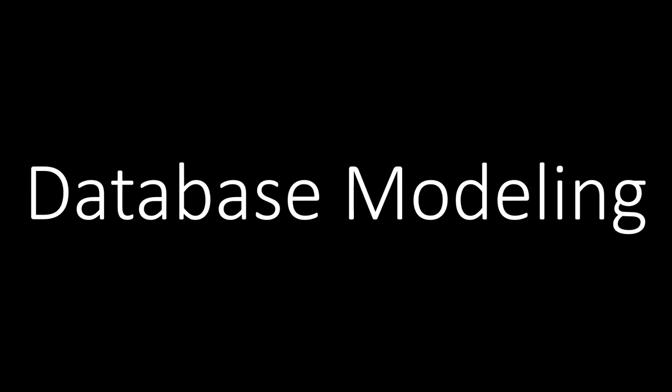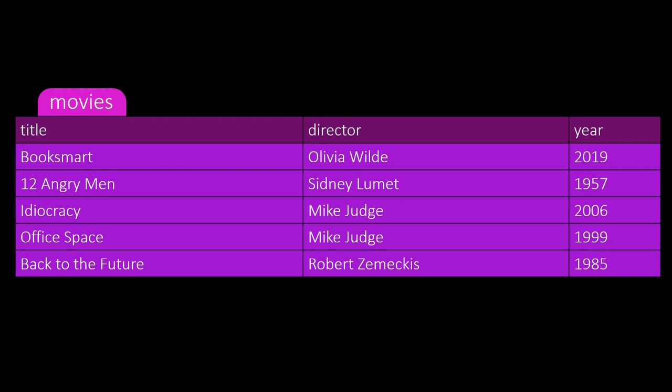Let's start with an example table about movies. Some basic information is already in the table. But what if we want to know more about the movie, for instance, where the director of the movie was born? Or who are the actors of the movie? We can add the birthplace and birth year of every director in our movie table, but now we repeat a lot of information. In particular, the birthplace and birth year of Mike Judge are there twice already in our small example table.